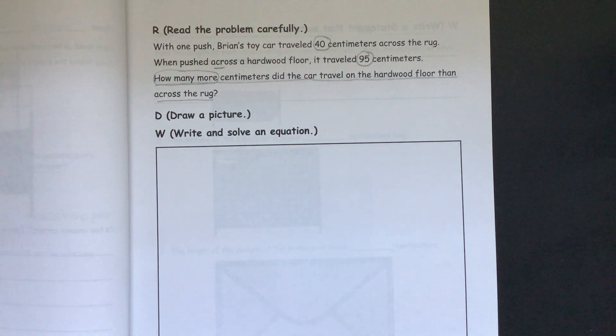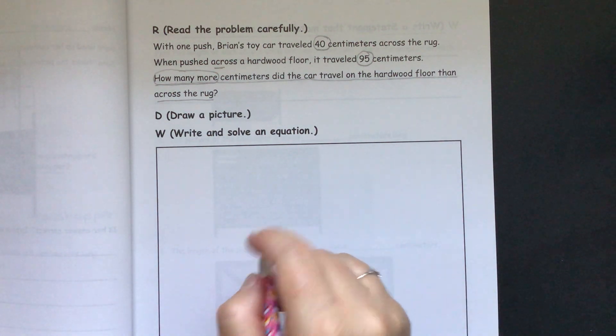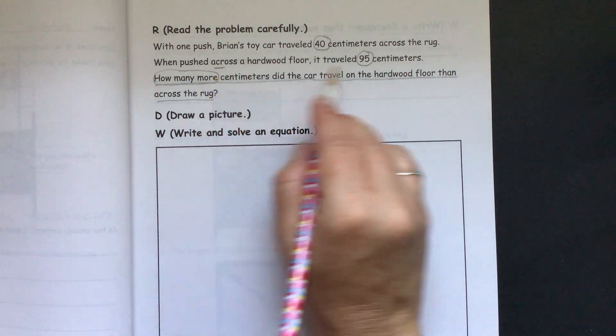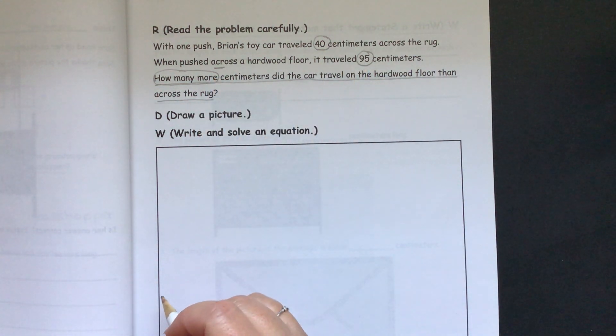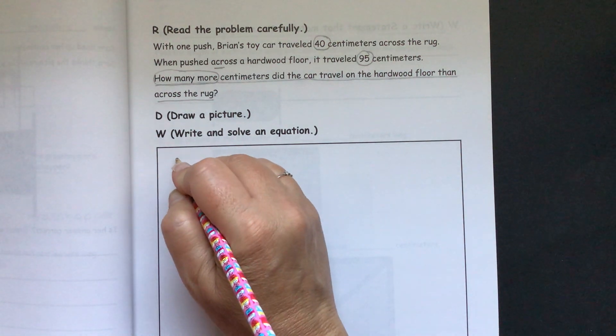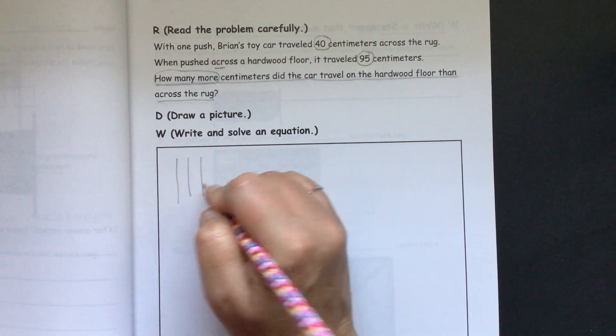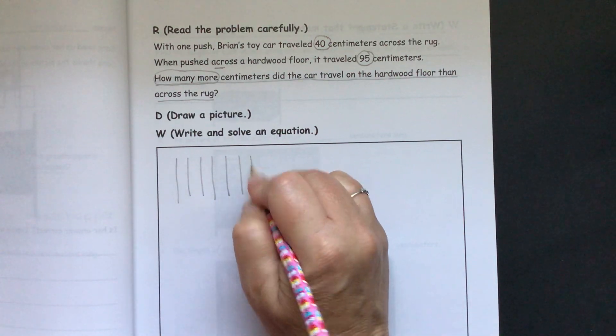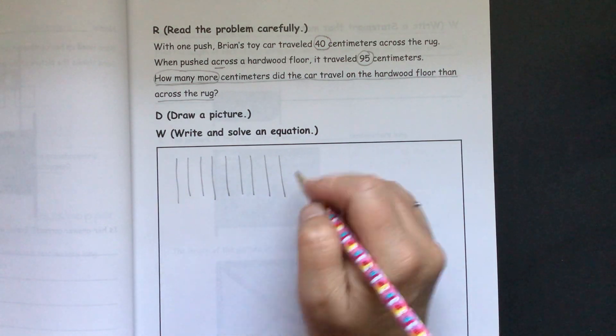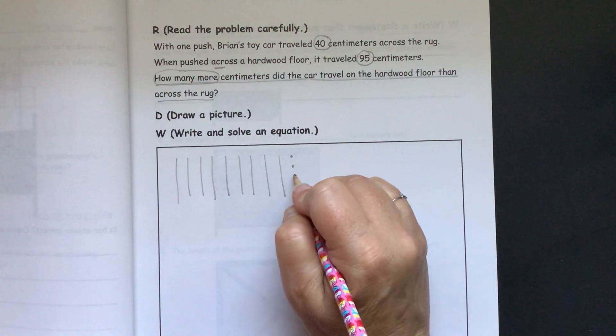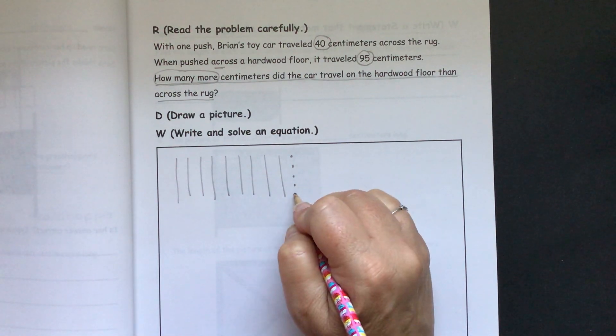So we could do our picture by doing our tens and ones. When we subtract, we just need to draw out the largest number. So we'll do 10, 20, 30, 40, 50, 60, 70, 80, 90, 91, 92, 93, 94, 95.